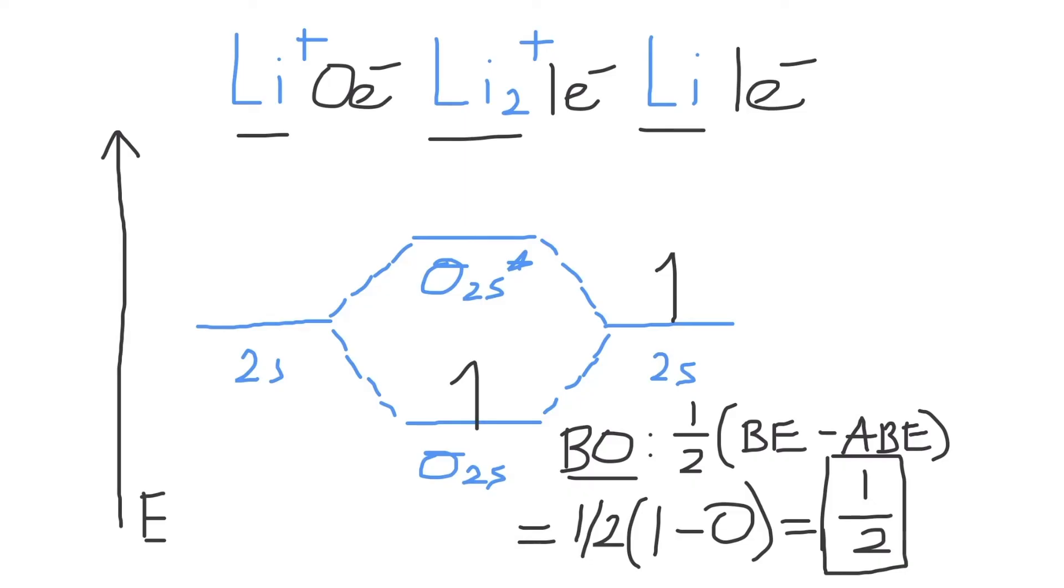Finally, is Li2 plus paramagnetic or is it diamagnetic? Because there is an unpaired electron in the Li2 plus molecular orbitals, we know that Li2 plus must exhibit paramagnetism and we can say that it is paramagnetic.